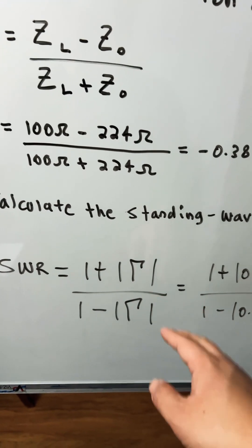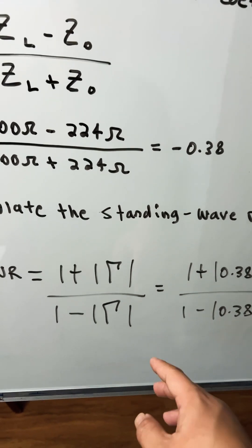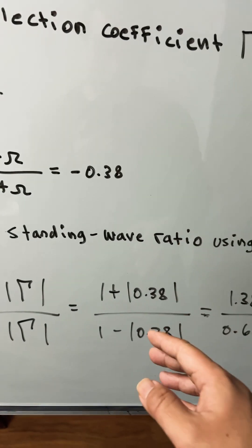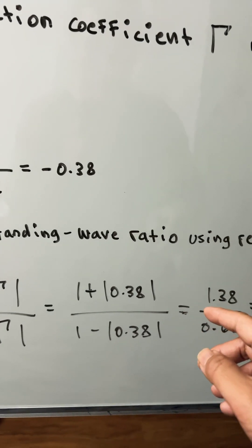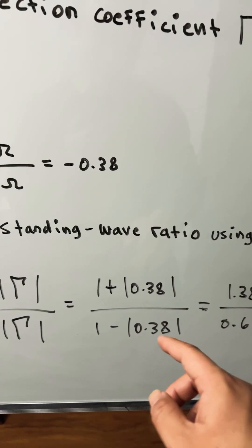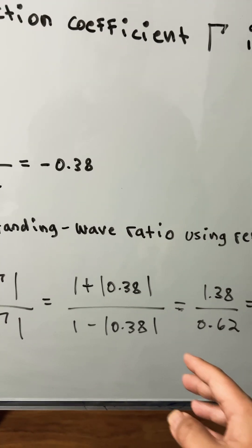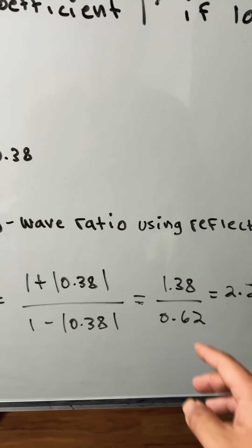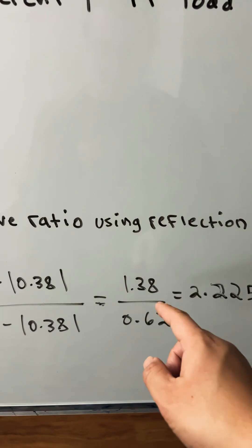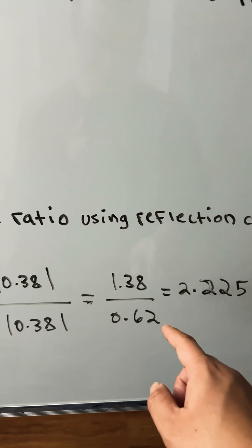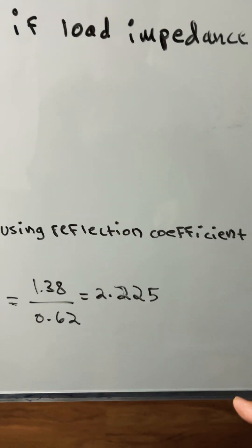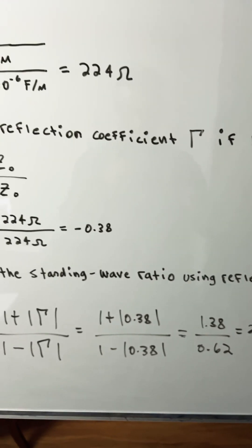So it equals 1 plus 0.38 divided by 1 minus 0.38, because it's an absolute value so we don't have to worry about the negative sign. So it would be 1.38 divided by 0.62 equals 2.225 and that's all. Thank you.